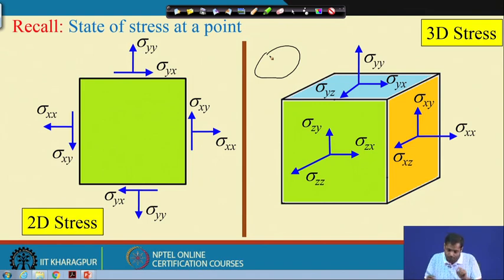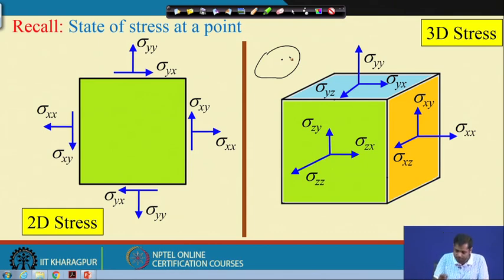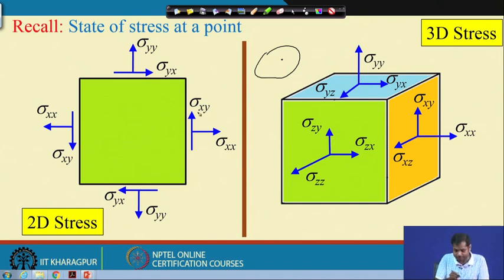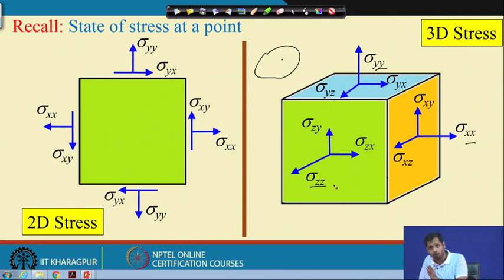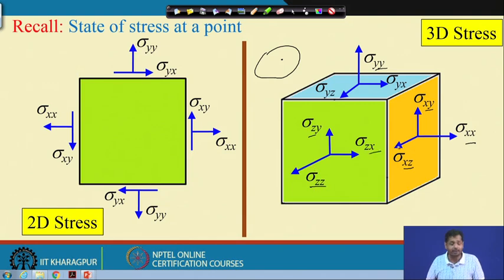If we take a point, this is how we represent the stresses. For a point in 2D space — a 2D body — sigma_xx, sigma_yy, sigma_zz are the normal stresses acting in the normal direction, while sigma_xz, sigma_xy, sigma_zx are shear stresses acting on different planes. Similarly for the 2D case.